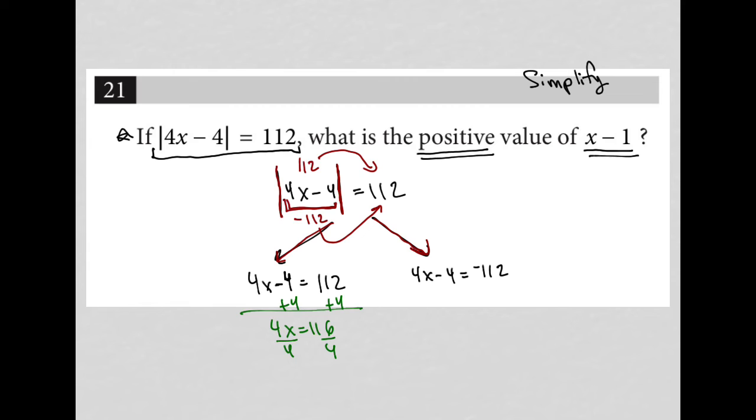I grab my calculator. Maybe some of you don't need to use your calculator here. I like to use it just to make sure I'm correct and don't make any small errors. So 116 divided by 4 is equal to 29. So in this case, x equals 29.